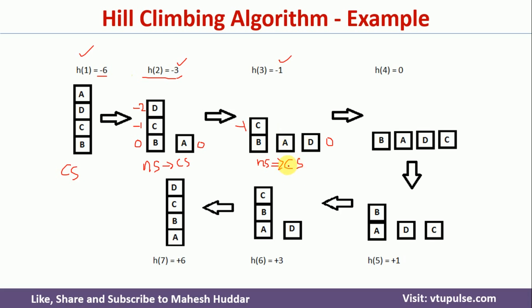We apply another operator: we bring block C down to the ground to produce a new state. The heuristic value of this new state is 0 because all blocks are on the ground with no support structures. It is not a goal state, but its heuristic value of 0 is better than the current state value of minus 1, so this new state becomes the current state.